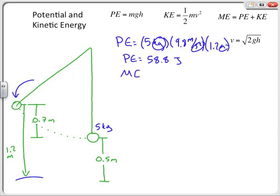How much mechanical energy do we have if the ball is just sitting at rest? Mechanical energy equals potential plus kinetic. Since it's at rest, kinetic energy is zero, so mechanical energy is also 58.8 joules. As the ball swings down to the bottom, mechanical energy is still 58.8 joules — that's what's conserved, as long as there's no friction.